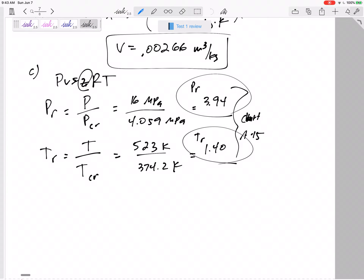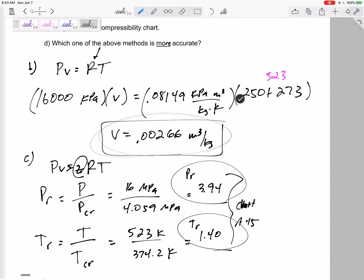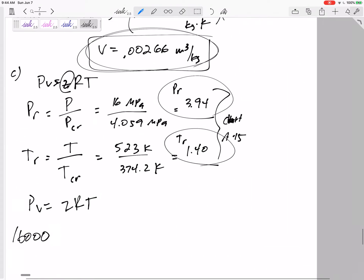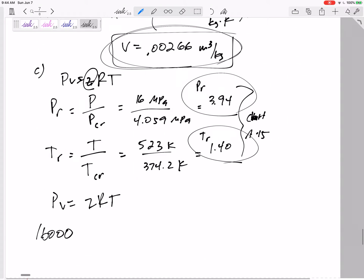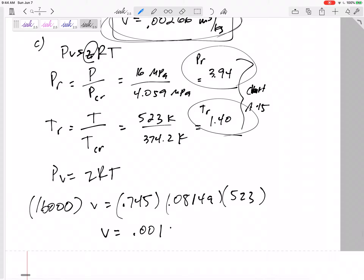All right, so PV equals ZRT. You don't really have to redo this whole thing. You could just take this and multiply it times 0.745. But I just like to maybe just double check my answer. We can do this again, but it's the same value: 0.08149, temperature of 523. My new specific volume is 0.00198 meters cubed per kilogram.